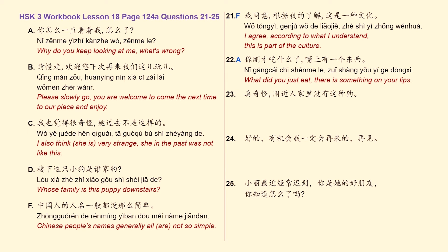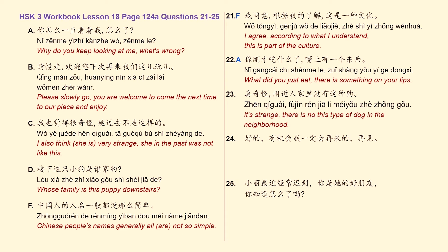Sentence number 23: 真奇怪。附近人家里没有这种狗。 — It's strange. There is no this type of dog in the neighborhood. Related to that, we have the keyword here: 狗. So, letter D: 楼下这只小狗是谁家的？ — Whose family is this puppy downstairs?